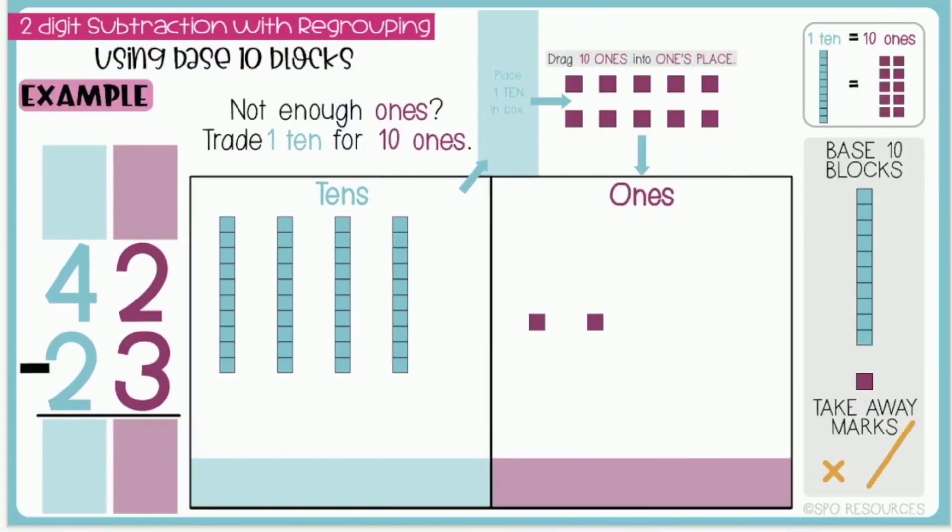Now that I have shown 42 on the place value mat, I can subtract 23 using my takeaway marks. Remember to always start in the ones place. I have two ones, and I need to subtract three ones. Since I don't have enough ones in the ones place, I will need to regroup.